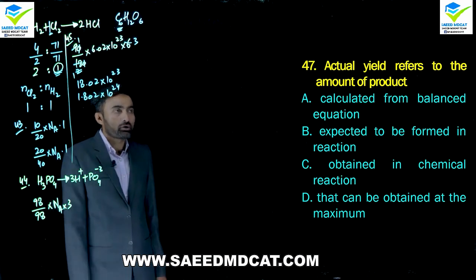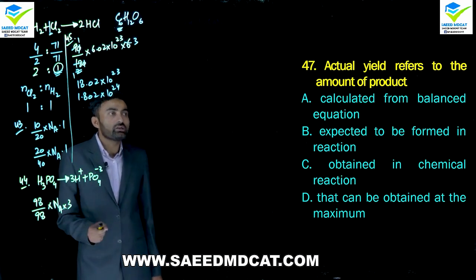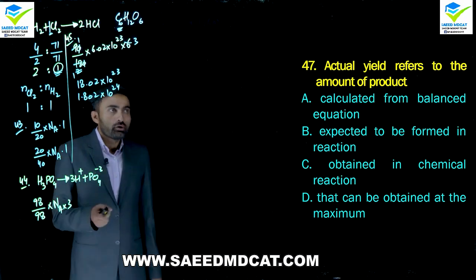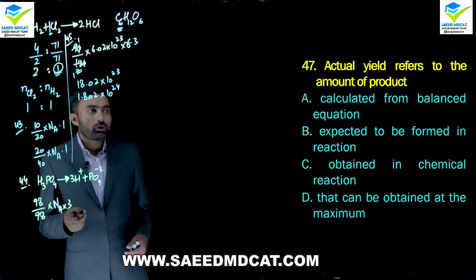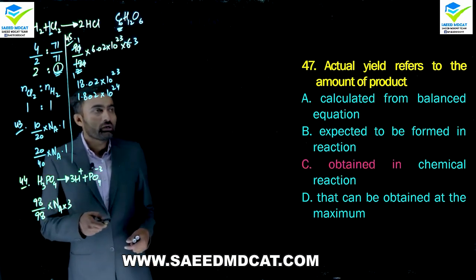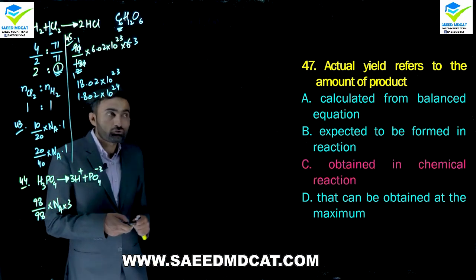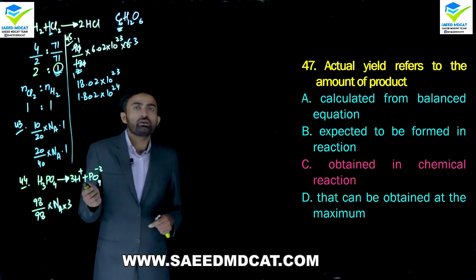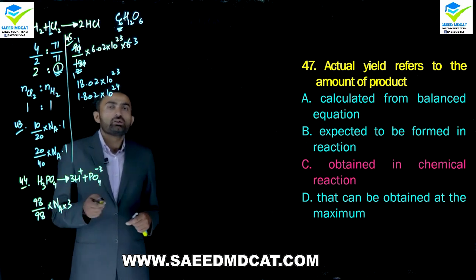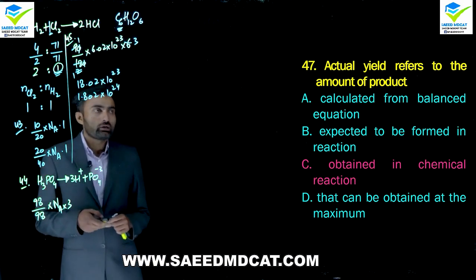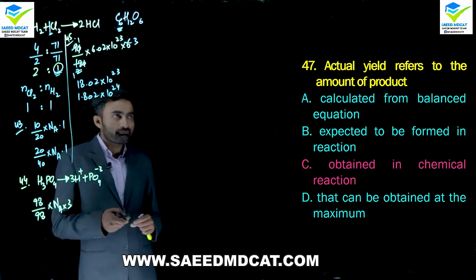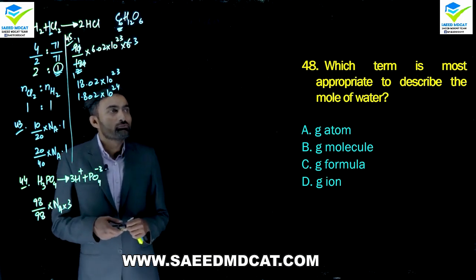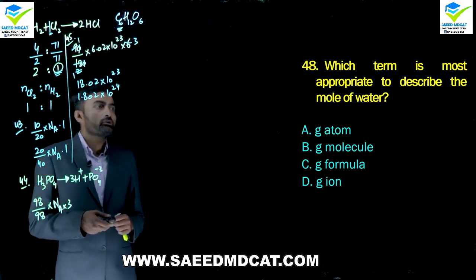Question 47: Actual yield refers to the amount of product which is obtained in a chemical reaction — actually by experiment, not theoretically. This is the experimentally obtained amount.